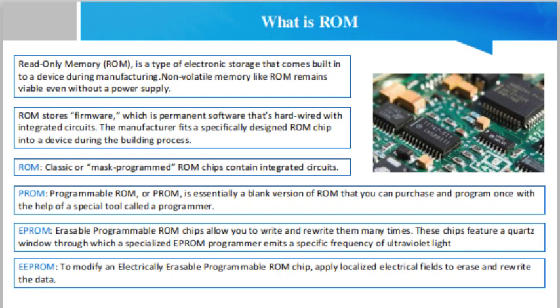A PROM, or programmable ROM, is essentially a blank version of ROM that you can purchase and program once with the help of a special tool called a programmer. A blank PROM chip allows current to run through all possible pathways. The programmer chooses a pathway for the current by sending a high voltage through unwanted fuses to burn them out.